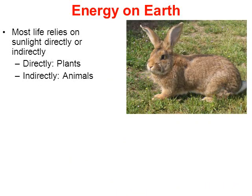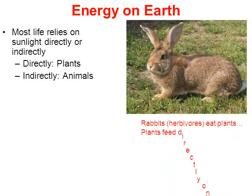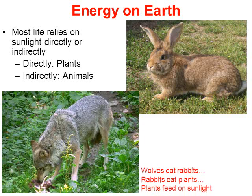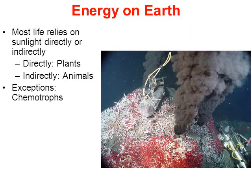Indirectly, consumers — heterotrophs such as a rabbit — are herbivores that eat plants, and plants feed directly on sunlight. So the rabbit gets energy directly from the plant, and the plant gets energy directly from the sun. Meat eaters like wolves get energy indirectly from the sun: wolves get their energy from rabbits or other small rodents, which before being caught fed on a plant that got its energy from the sun. Most life relies on the sun directly or indirectly.